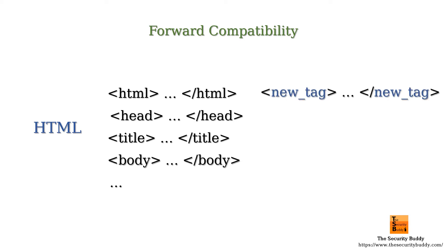So if we want forward compatibility, then the older version of the programming language should read new tags that it does not understand and ignore them instead of throwing errors.